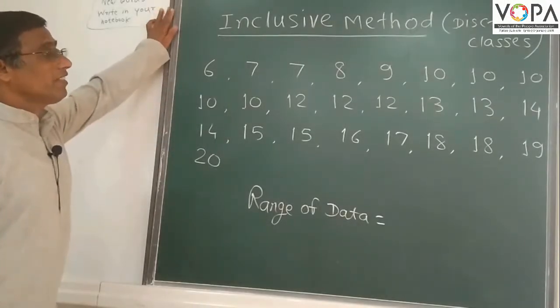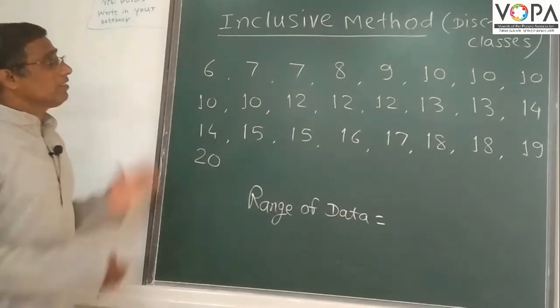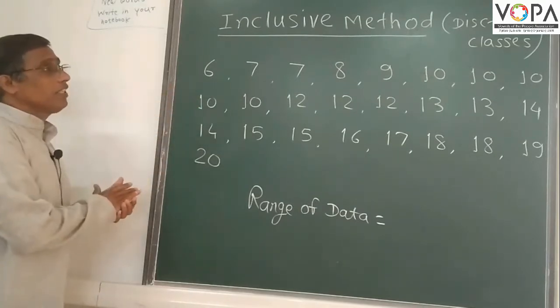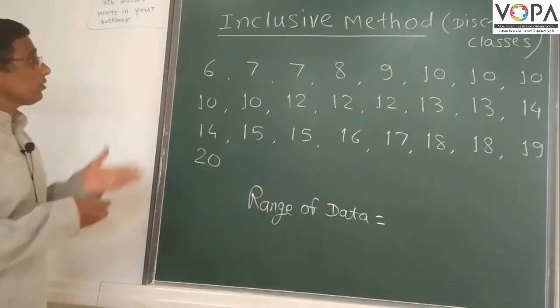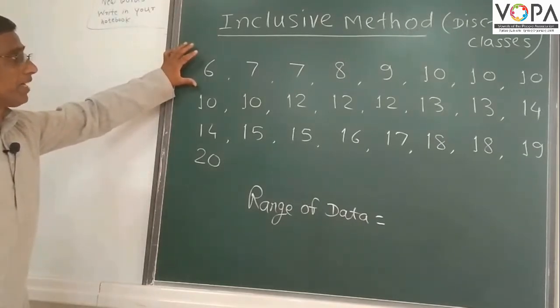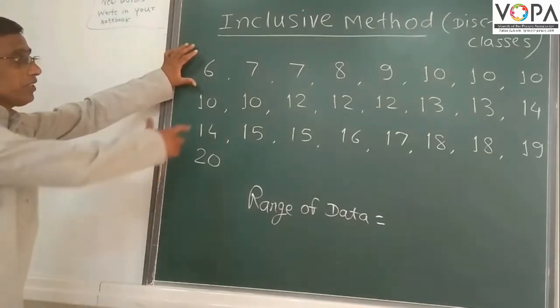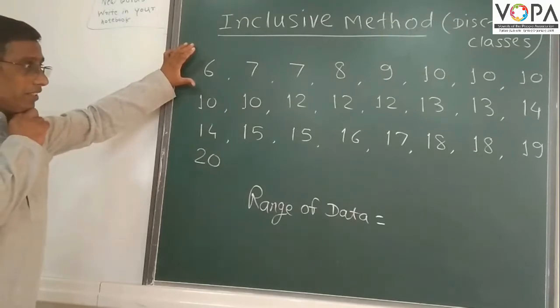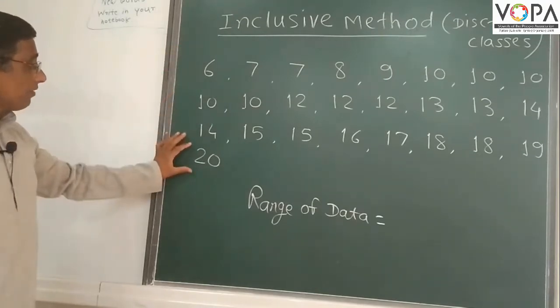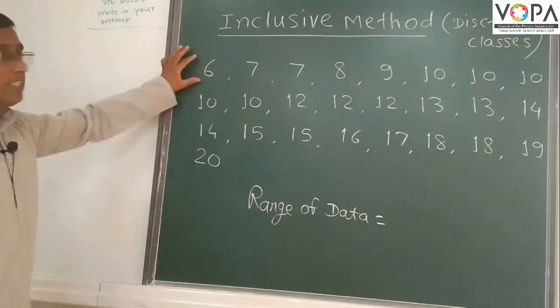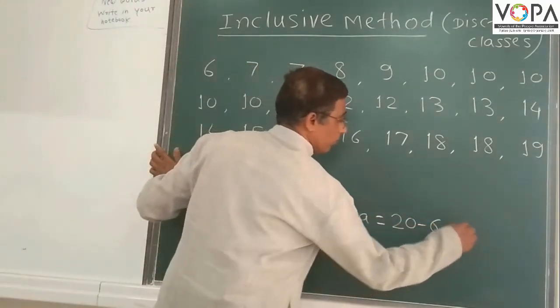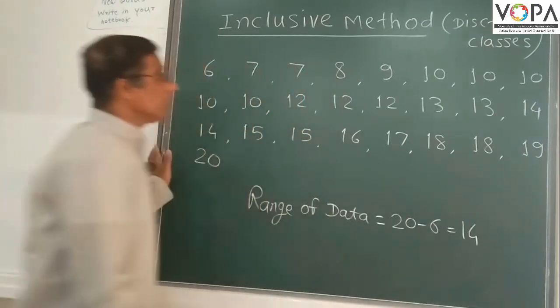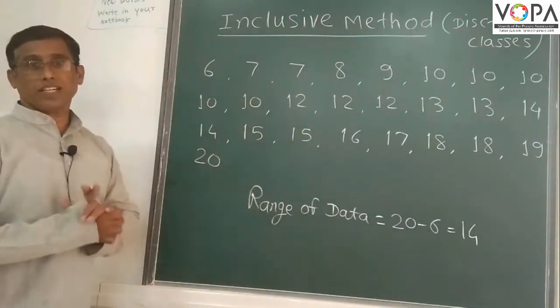Inclusive method, discrete classes. This is math in mathematics out of 20. Some students got 6 marks, 7 marks, 8 marks like this. Some students got 18, 19, 20. So here maximum marks is 20 and minimum is 6. So range of the data is 20 minus 6 is equal to 14. This is the score of this data.